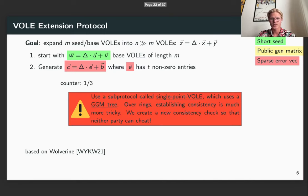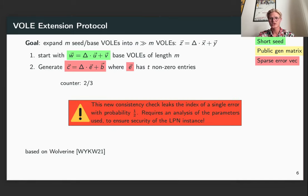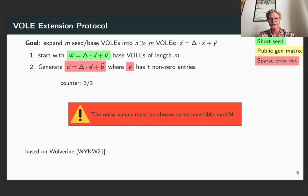But this has three main issues. The way you usually do this is by using a sub protocol called single point vector OLE, which uses a GGM tree. Now over rings establishing consistency is much more tricky than over a field when you use a GGM method. So therefore we create a new consistency check so that neither party can cheat. This new consistency check however leaks the index of a single error with probability a half. So this requires an analysis of the parameters used within the LPN instance to ensure it's still secure. Now finally the noise values within this noise vector must be chosen very carefully so that you cannot break this through a recent attack.